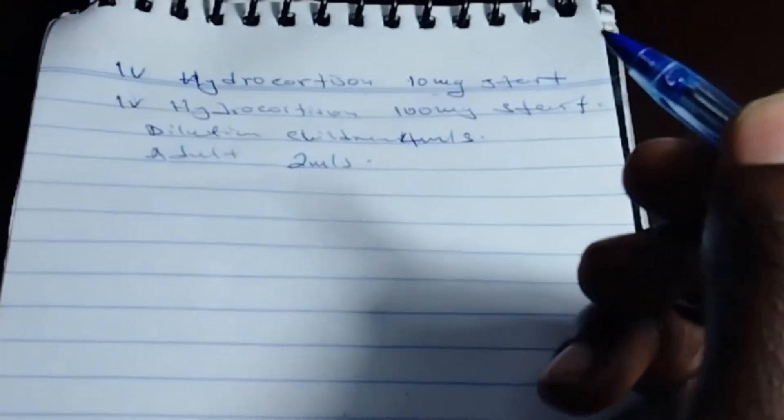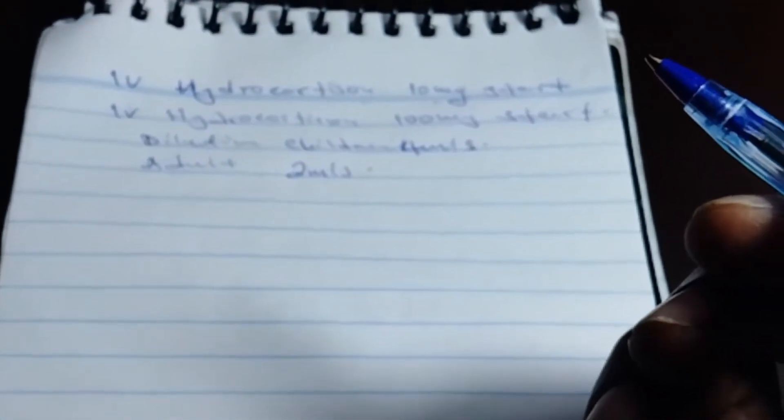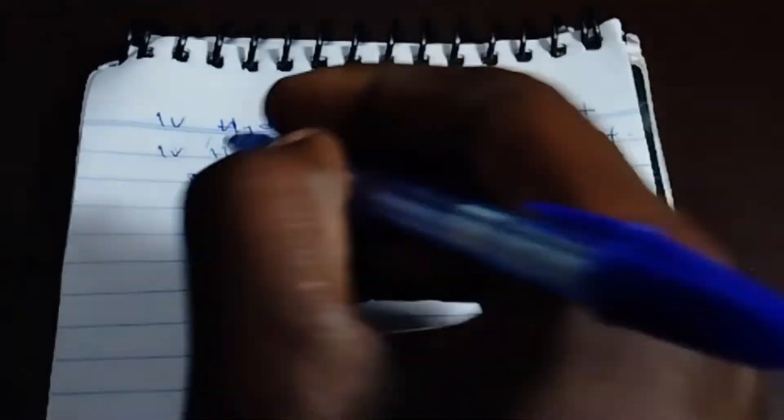You know that we dilute with two mills this hydrocortisone. So we are going to dilute our hydrocortisone with four mills of water for injection or normal saline. We are going to use the same format.